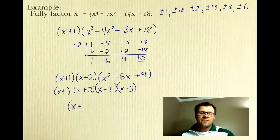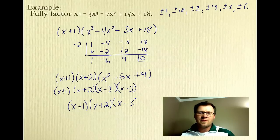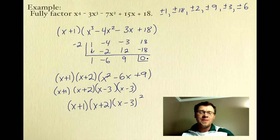We've reached a quadratic, so we can factor x squared minus 6x plus 9 by inspection or decomposition. We're looking for two numbers that multiply to 9 and add to negative 6 — that's negative 3 and negative 3. So we have fully factored the polynomial. We've used the concept of the remainder theorem: knowing that a remainder of 0 means a factor, and that's how the remainder theorem ties into the Factor Theorem.